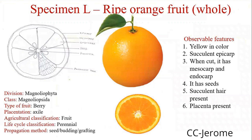Specimen L, ripe orange fruit. The type of fruit, presentation is as a hesperidium. Agricultural classification: fruit. Life cycle classification: perennial crop. Propagated by seed, budding, or grafting. Observable features: yellow in color, succulent epicarp. When cut — that is a cross section — you'll be able to see the mesocarp and the endocarp. It has seeds, succulent hairs present, placenta present.